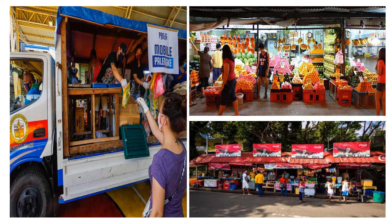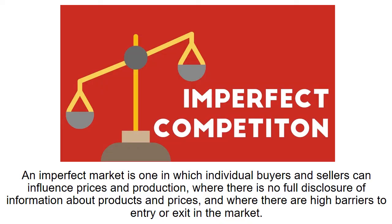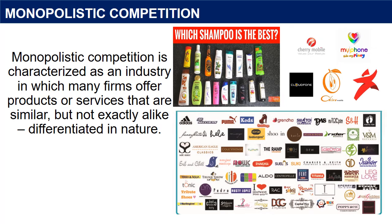Previously, we have discussed one of the market structures which is very typical in the Philippine market: the perfect competition. Sari-sari stores and other micro and small businesses are present in the perfect competition. For today's topic, we will discuss another market structure which is monopolistic competition. This market structure is part of the imperfectly competitive market. An imperfect market is one in which individual buyers and sellers can influence prices and production, where there is no full disclosure of information about products and prices, and where there are high barriers to entry or exit in the market. Monopolistic competition is characterized as an industry in which many firms offer products or services that are similar but not exactly alike — differentiated in nature.